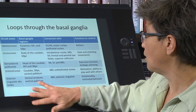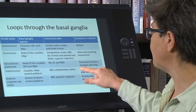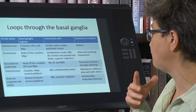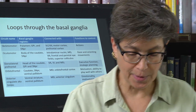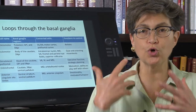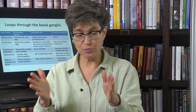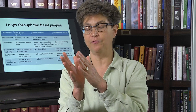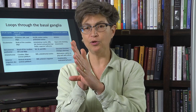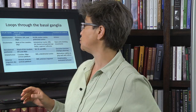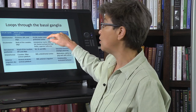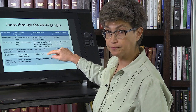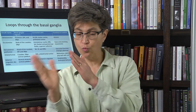The other loops have functions to control things such as executive function, strategic planning, motivation, and emotionality. When the basal ganglia are working really well, all of the loops work in concert. There are plenty of connections that enable each of the loops to tell the other loops what they're doing — projections, for example, between the thalamic regions involved and other cortical regions. So the loops are aware of what each one is doing.